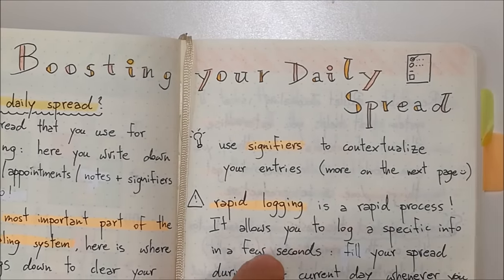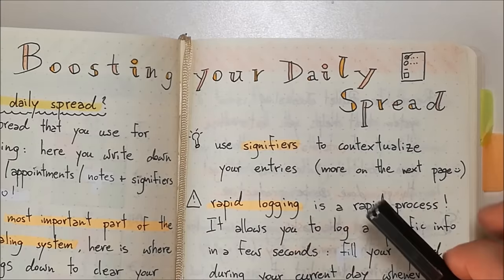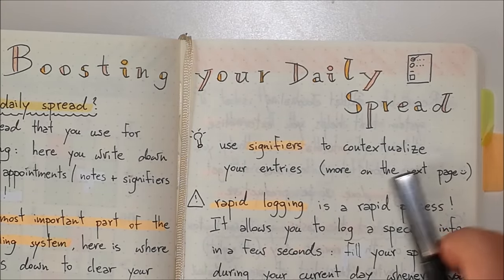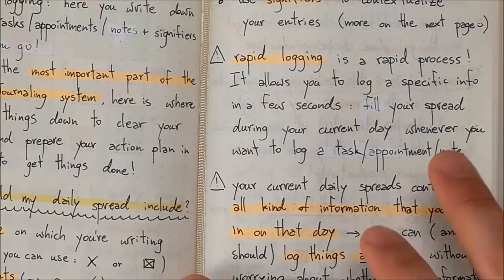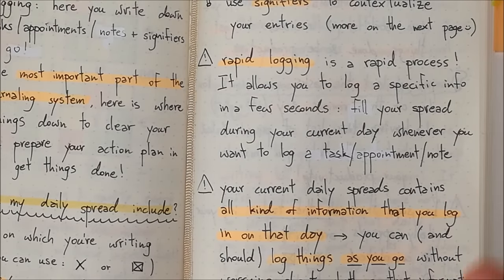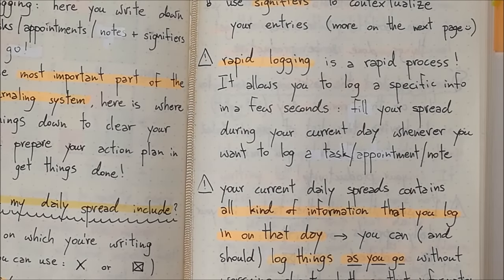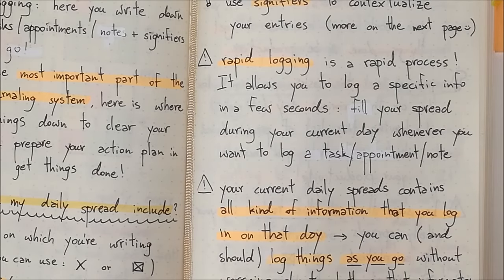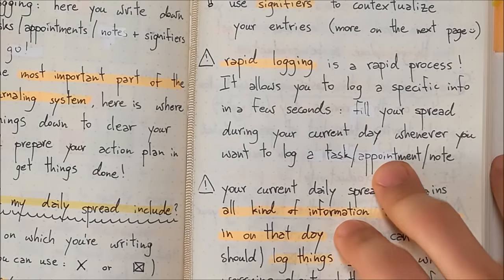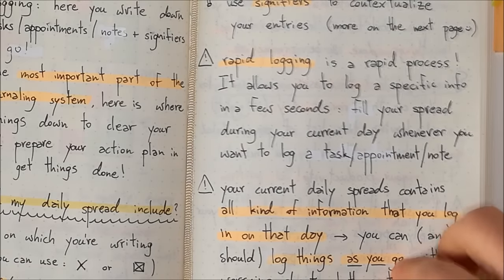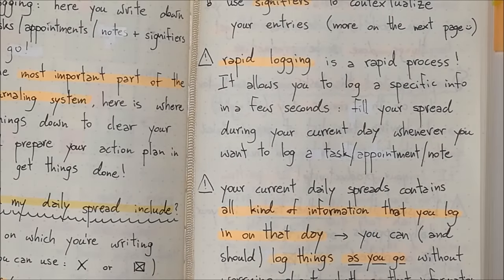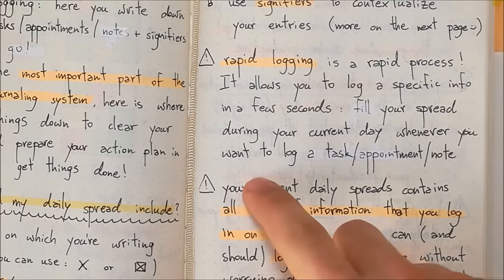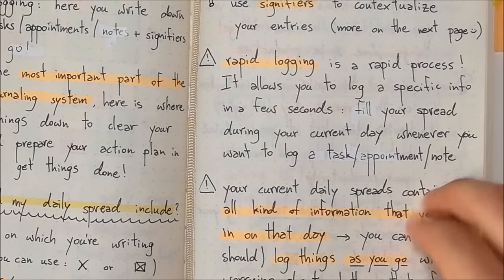It is very important to have signifiers. You use signifiers next to your entries in order to contextualize them. The most important thing about the daily spread is rapid logging, and rapid logging is supposed to be rapid — fast. This system allows you to log specific information within a few seconds. Whenever you have information you want to log into your bullet journal, you take your daily spread, add a bullet, write that information, and then add your signifier to contextualize the entry.